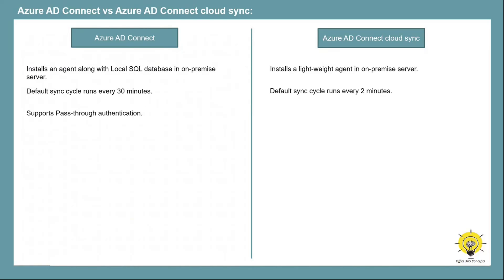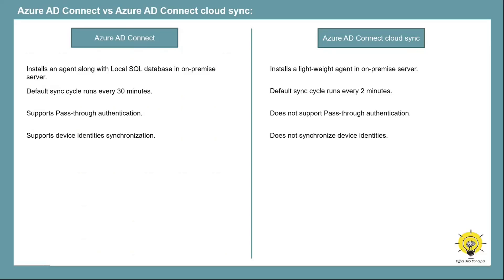Azure AD Connect supports pass-through authentication, but Azure AD Connect Cloud Sync doesn't support pass-through authentication. With Azure AD Connect, you can synchronize device identities to Azure AD, but in Cloud Sync this feature is missing. In Azure AD Connect, you can create more complex rules to customize the attributes flow, but in Cloud Sync you cannot create such complex rules.